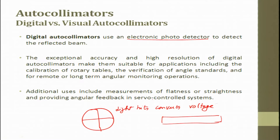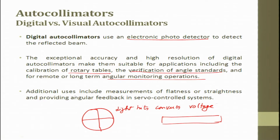The exceptional accuracy and high resolution of the digital autocollimator makes it suitable for applications including calibration of rotary tables used in CNC machines, CMM machines, and other high-precision measurement devices. Additional uses include verification of angular standards, remote or long-term angular monitoring operations, measurement of flatness and straightness (3D flatness, 2D straightness), and providing angular feedback in a servo control system.